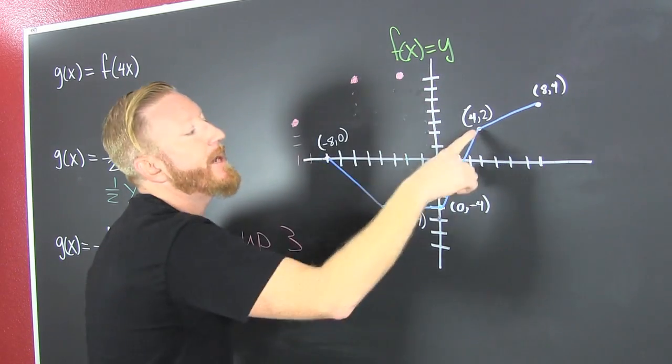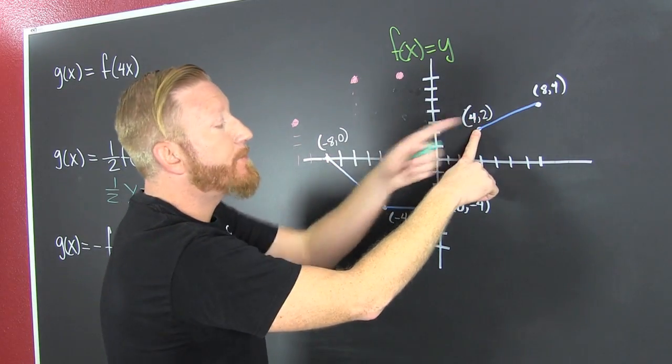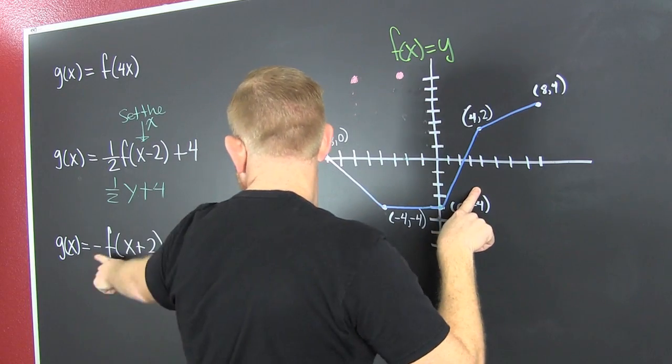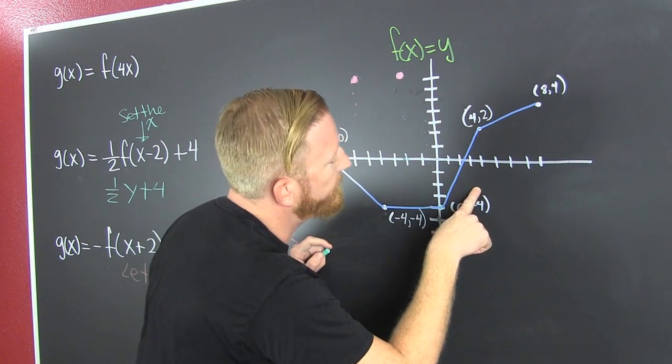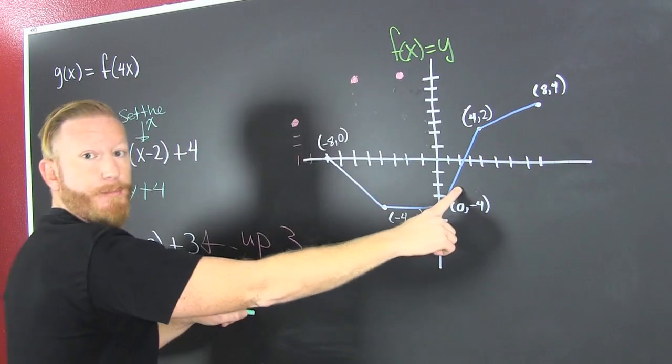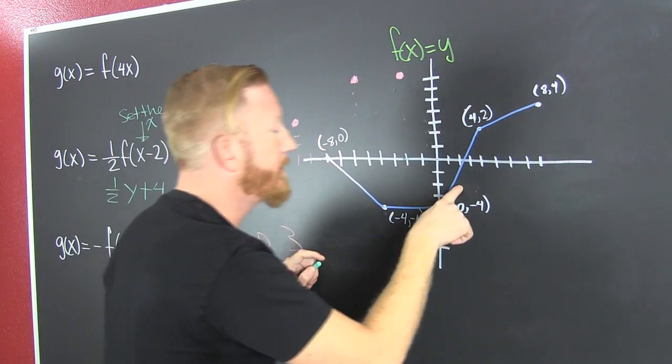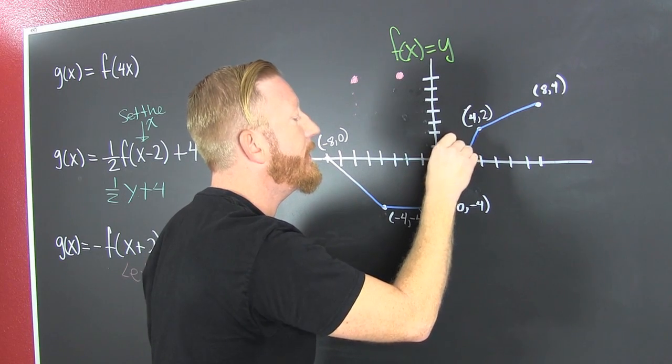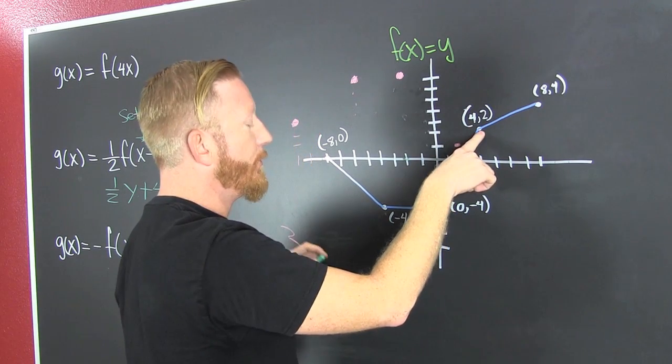Now this one. We flip it. It was a positive two. Now it's a negative two. Flip and move. So we flipped it. Then we go left two and then we go up three. So we go up three from there. That's that new point.